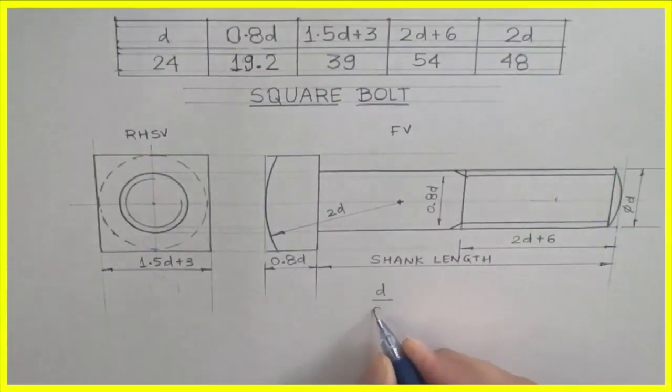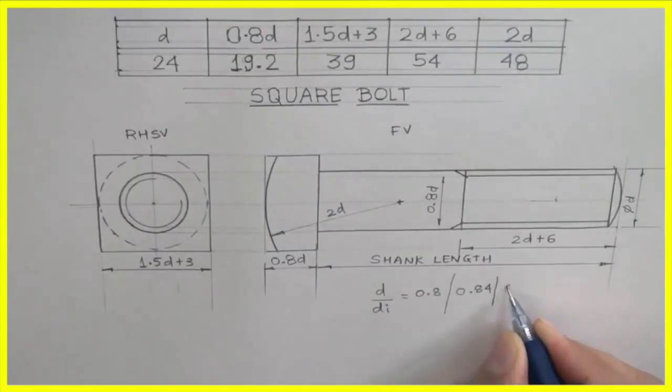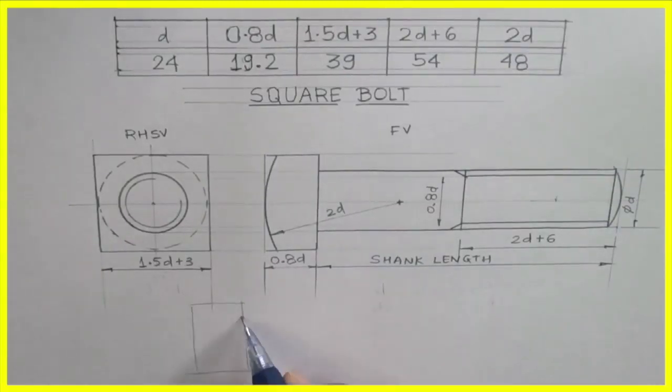Now d upon d, that is 0.8. It can be 0.84 also, it can be 0.85 also, so don't get confused. I'm using 0.8.